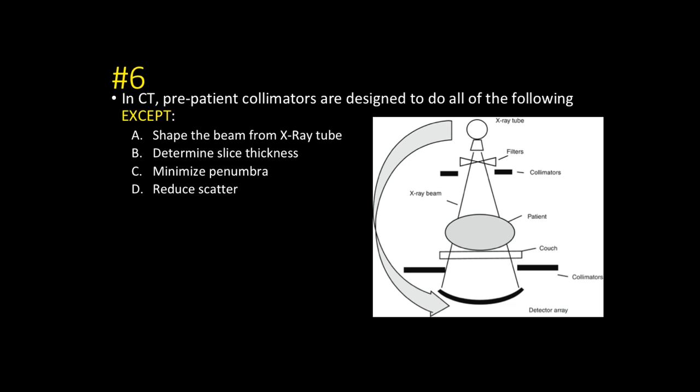Number six: in CT, pre-patient collimators are designed to do all of the following except reduce scatter. Options A, B, and C are all jobs of the pre-patient collimator: it shapes the beam from the x-ray tube, determines slice thickness, and minimizes penumbra. Penumbra is the portion of the x-ray beam that hits the patient but does not reach the detector — it's excess dose being wasted. The post-patient collimators, also called pre-detector collimators, are the ones that reduce scatter.